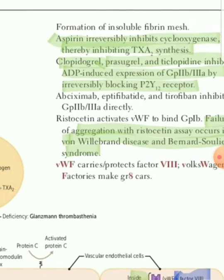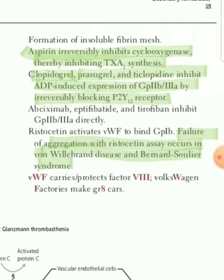Aspirin irreversibly inhibits cyclooxygenase, thereby inhibiting thromboxane A2 synthesis — that is an MCQ point. Because aspirin binds irreversibly, all platelets are knocked out. The half-life of platelets is relatively 7 to 10 days — also an MCQ. Before surgery, patients are asked to stop aspirin for at least one week, until all new platelets are in the body. Just like RBCs are completely replaced by 120 days, platelets are replaced in about one week.